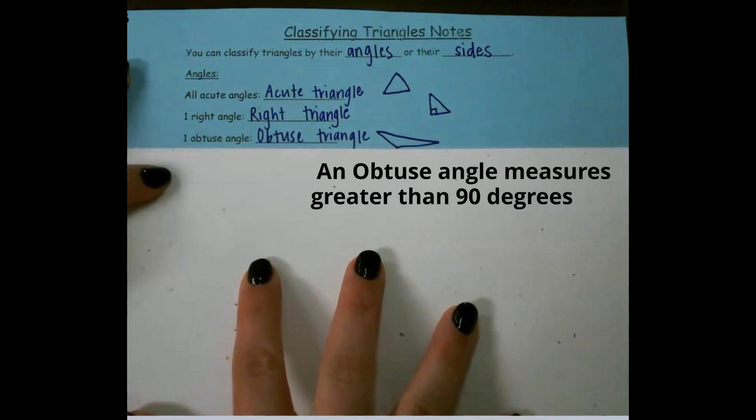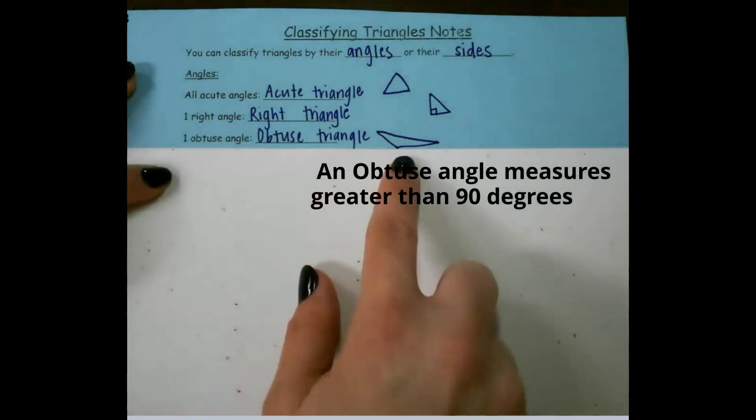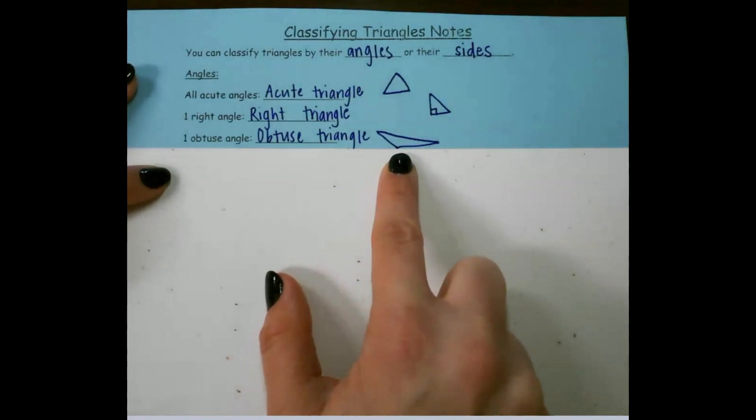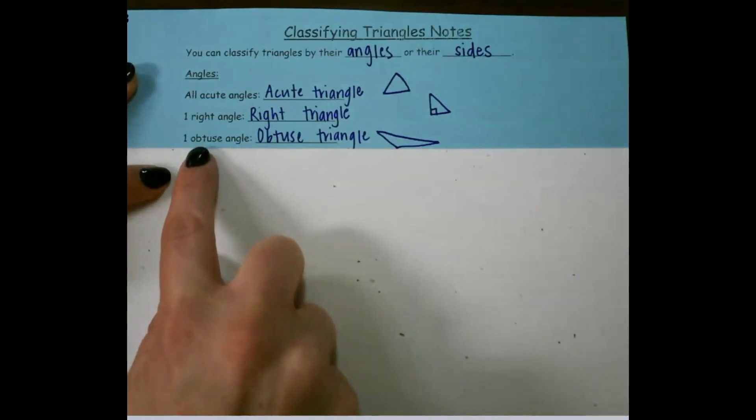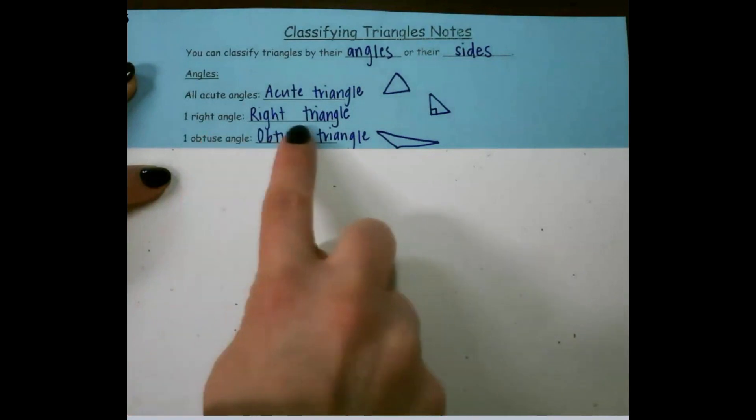If it has one obtuse angle, it would be an obtuse triangle and looks something like that. You cannot have a triangle that has more than one obtuse angle or more than one right angle.